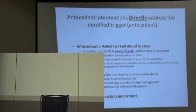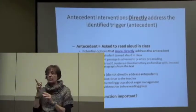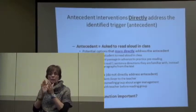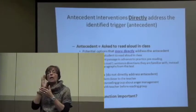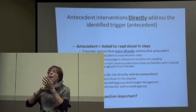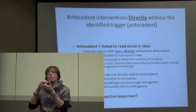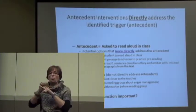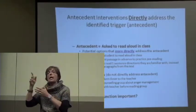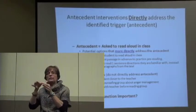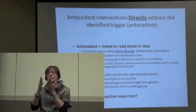For example, if we've identified the antecedent as being asked to read aloud in class, some good options that directly address this are: don't ask the student to read aloud; give the student a passage in advance to practice pre-reading; or let the student read one-sentence directions they're familiar with instead of entire paragraphs. You see how these directly address reading aloud.